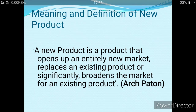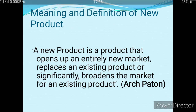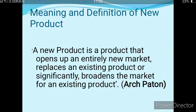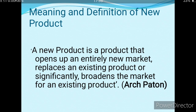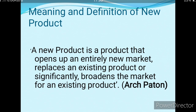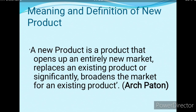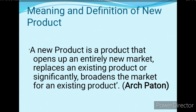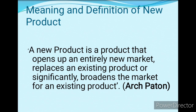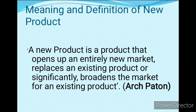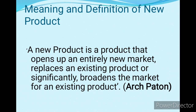Now let's discuss the meaning and definition of a new product. According to Pattern, a new product is a product that opens up an entirely new market, replaces an existing product, or significantly broadens the market for an existing product. Pattern has divided new products into three categories: first, a product introduced in the market for the first time; second, an existing product replaced by a new one; and third, an existing product introduced into a new market area.